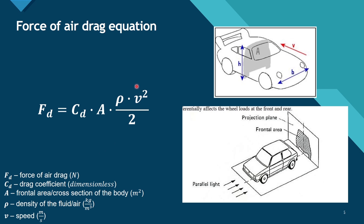The drag coefficient Cd is an empirical, dimensionless coefficient. The smaller the coefficient, the smaller the force, meaning a vehicle with a very low Cd has less air drag and better overall aerodynamics. The term ρv²/2 in the equation is called dynamic pressure — because the vehicle body is cutting through air and fighting the kinetic energy of the fluid. So simplified, this force is just the frontal area times dynamic pressure times the drag coefficient.